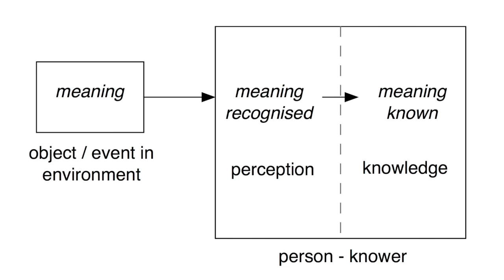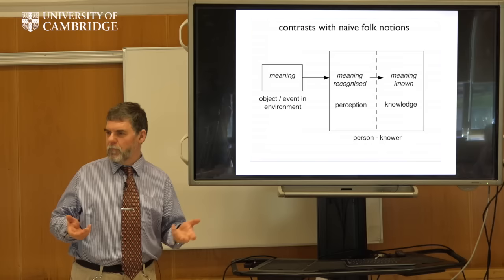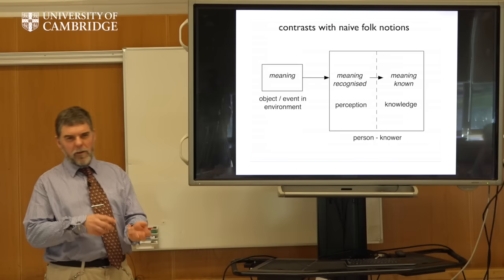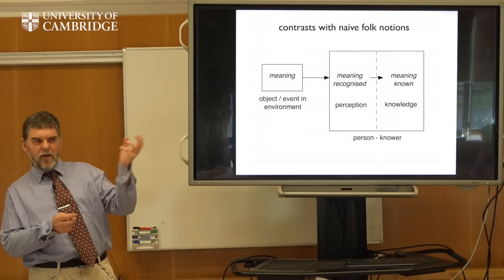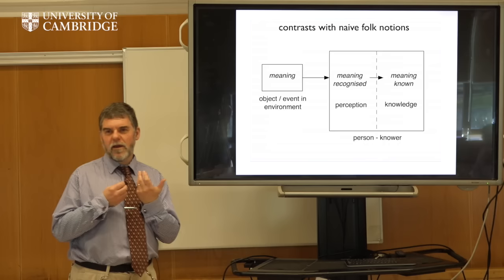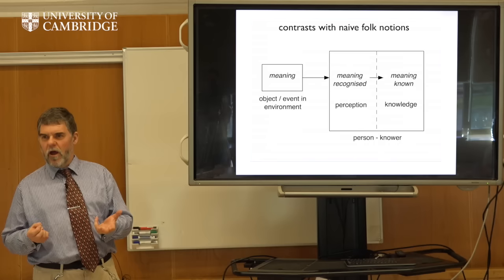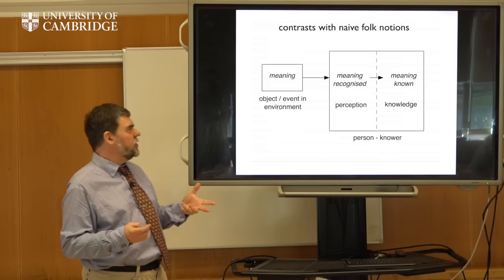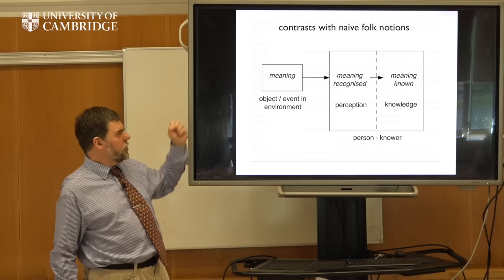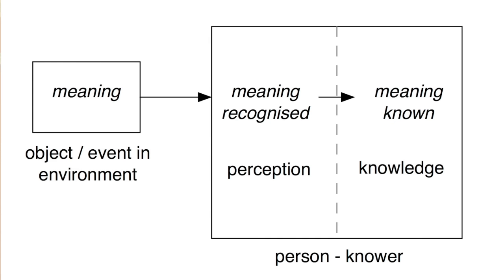Anyone from a psychological background will have come across the idea of theory of mind — the fact that a normally developing child starts to develop the notion that some other regularities in my environment have minds. The cupboard probably doesn't have a mind; mummy probably has a mind. As they get older, they start to understand that mummy's mind may know things different to what they know, even though they both have minds. One outcome of this process is that we grow up with some very naive notions about teaching and learning — folk notions. If you talk about teachers in schools, this language is very dominant: that teaching and learning is a bit like transfer of information.